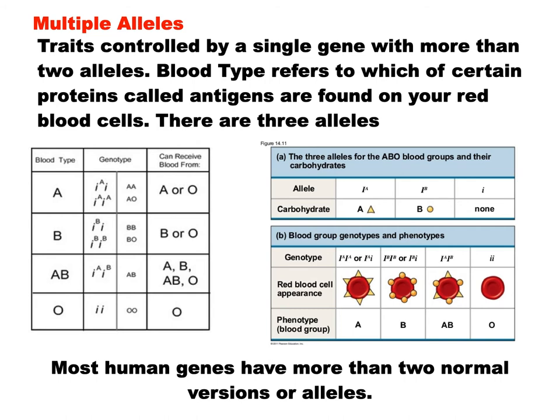This is a multiple allelic situation: there's more than one allele involved. These alleles are all on the same gene, but there are three different versions — A, B, and neither — circulating in the human population. You get one from mom and one from dad, but there are three possibilities, not just two. They're also co-dominant — if you get type A and type B, both get expressed and you're AB, like checkered chickens.